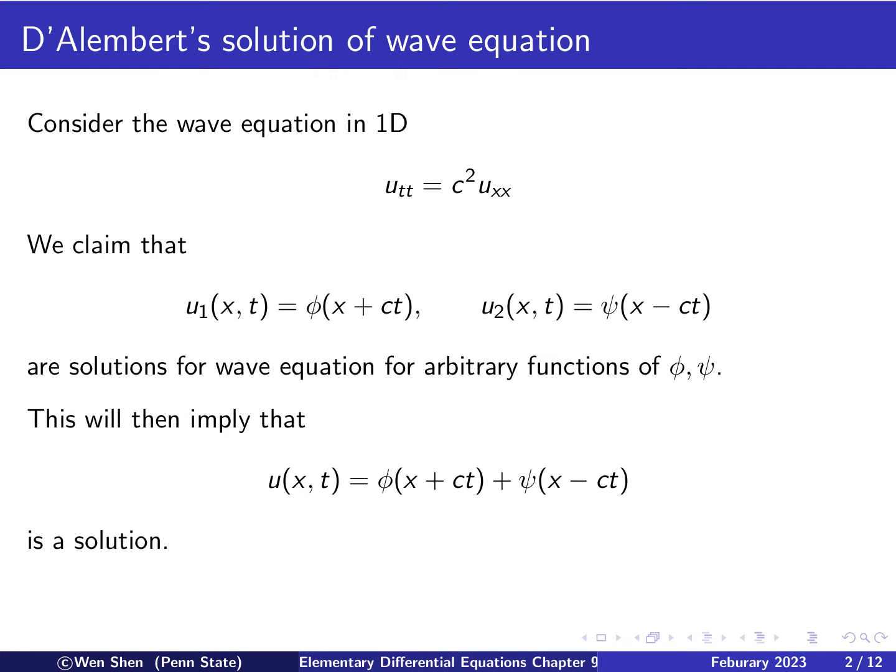And then if that is true, then by the principle of superposition, the sum of these two will also be a solution of the wave equation. Therefore, the solution can be written as φ of x plus ct plus ψ of x minus ct. So what remains are two things: first, to show that this claim is correct, and second, to show how we figure out these two functions, which are arbitrary right now.